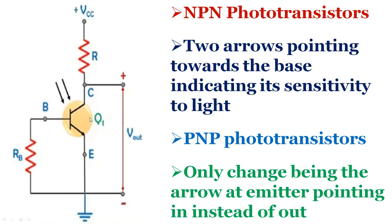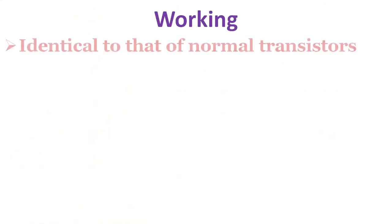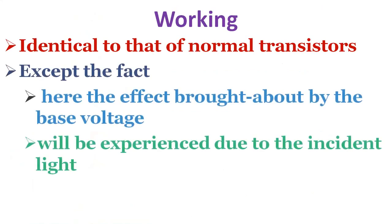Now let's see how a phototransistor works. The behavior of phototransistors is identical to that of normal transistors, except the fact that here the effect brought out by the base voltage will be experienced due to the incident light. This can be made clear by analyzing the following characteristics.